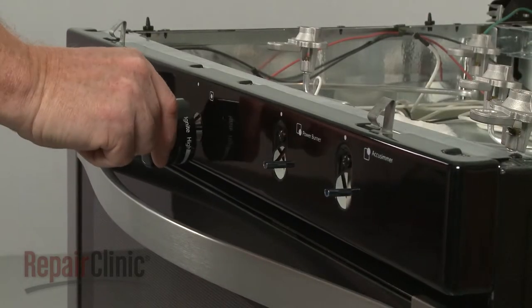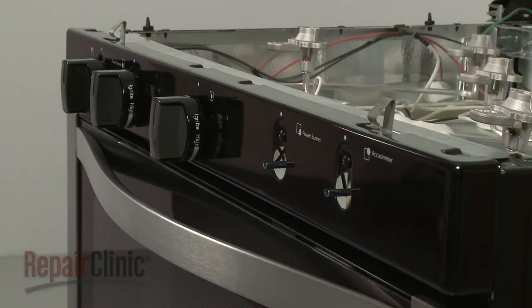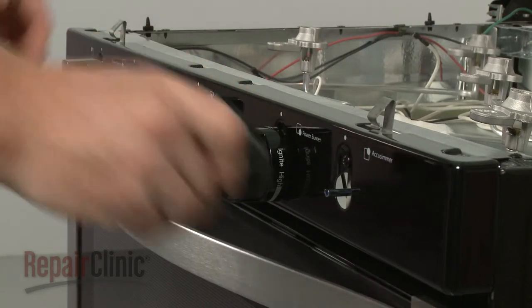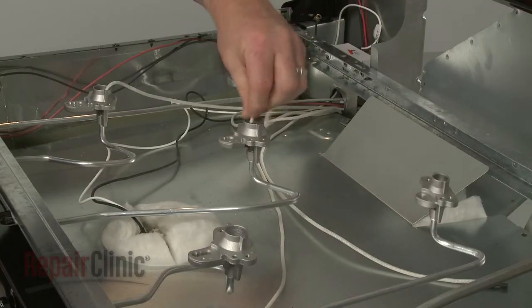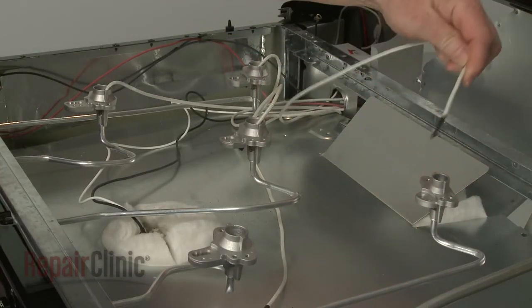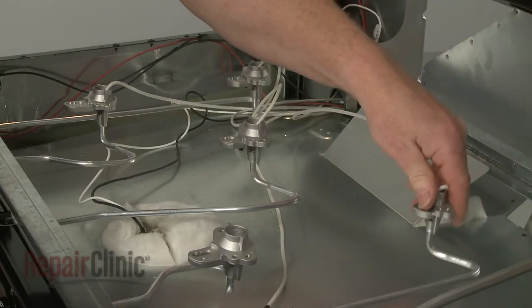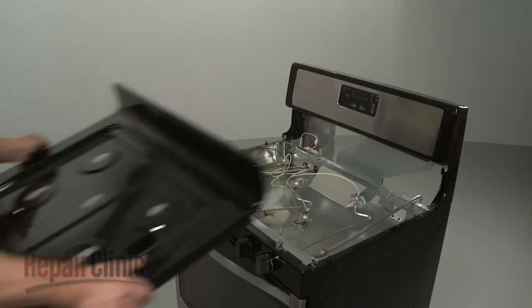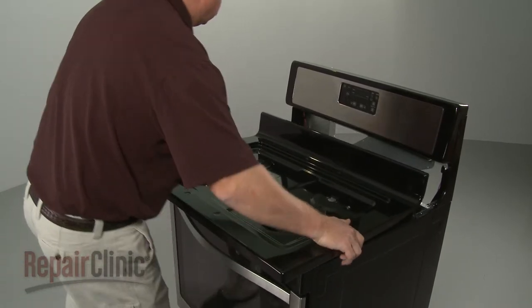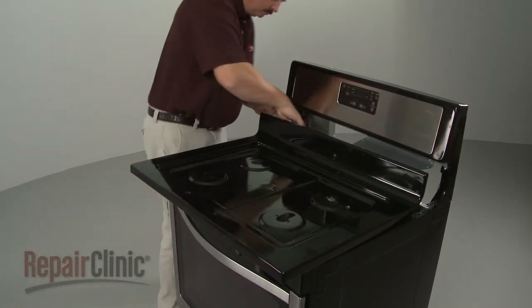Replace the burner control knobs. Before you reinstall the main top, we recommend inserting the spark wires in the orifice holders to secure them. Now set the main top on the frame and secure the grounding wire with the screw.